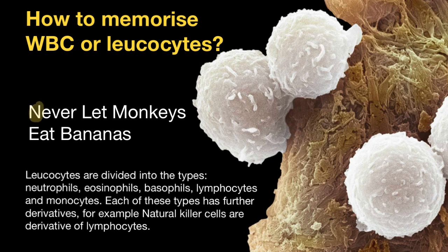N stands for neutrophils. L in 'Let' stands for lymphocytes. M in 'Monkeys' stands for monocytes. E in 'Eat' stands for eosinophils. And B in 'Bananas' stands for basophils.